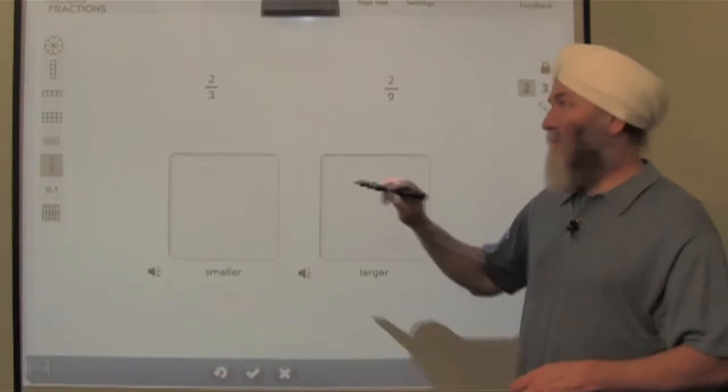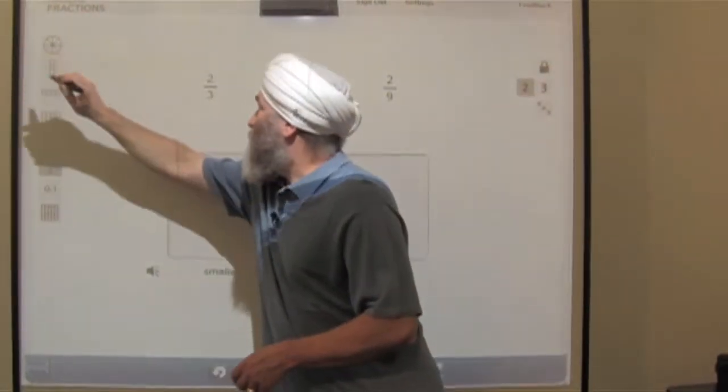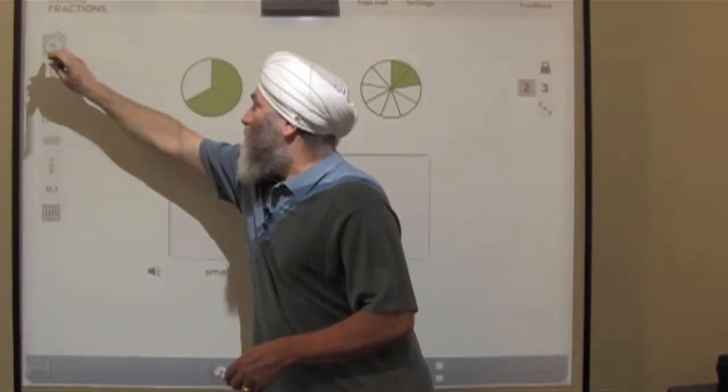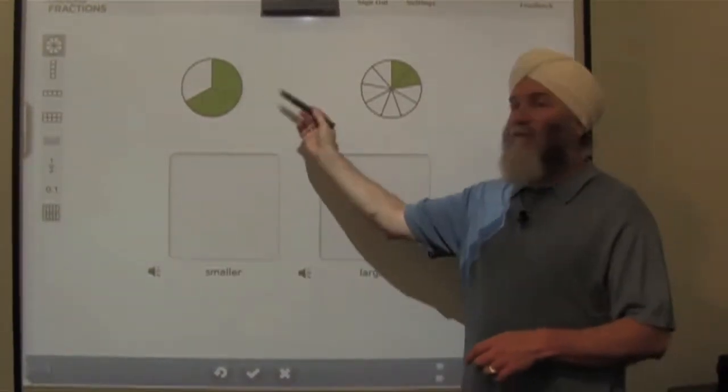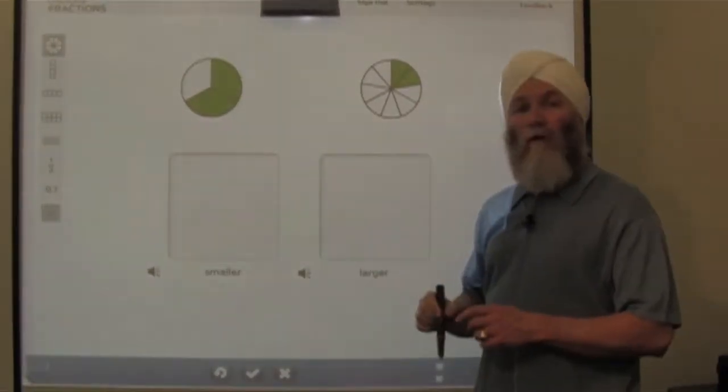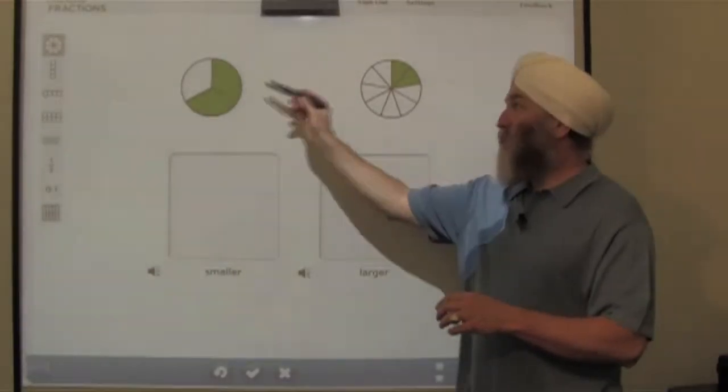Let's turn these fractions into circles. Each circle represents an hour, and in this case we've divided the hour into three equal parts. Two of them are shaded, two-thirds of the hour.